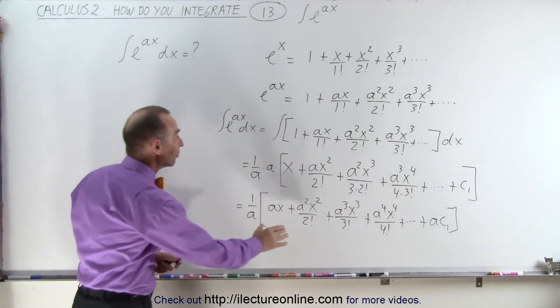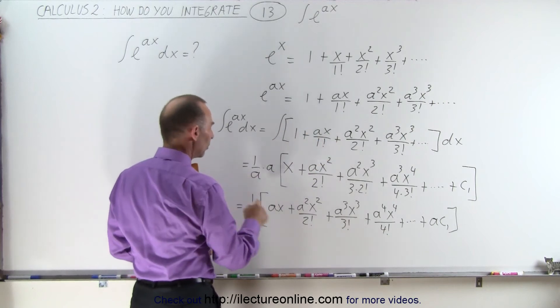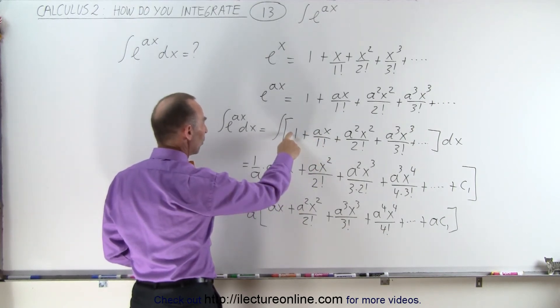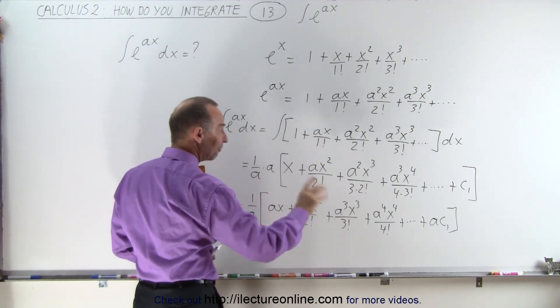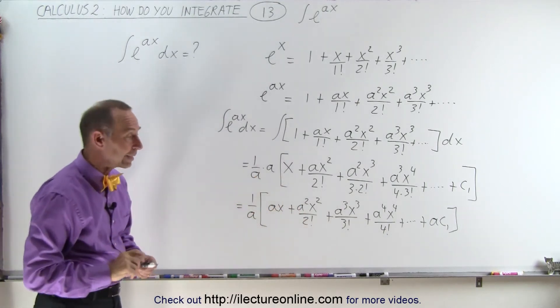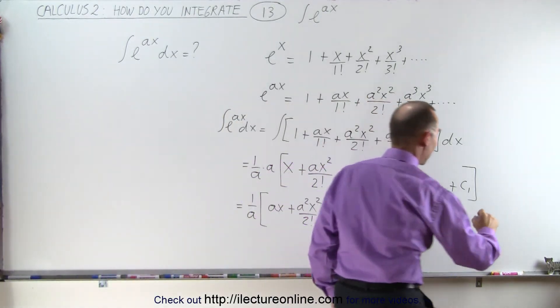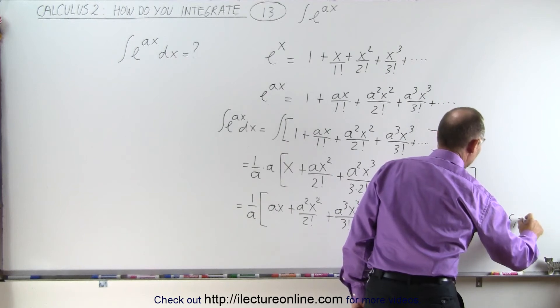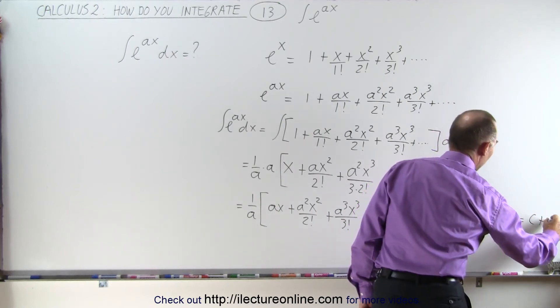What I want to do now is make this look like the original series, which means I need a 1 in the front, which I don't have, but I do have a constant in the back there. What I can do is I can say, let ac1 equals c plus 1.